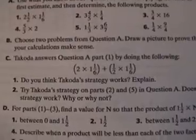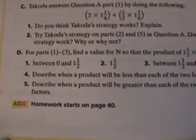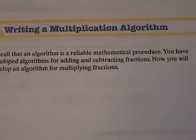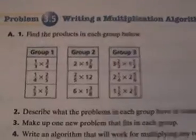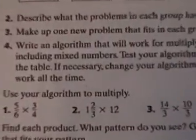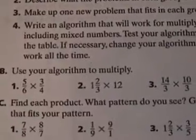They're breaking up the two parts to make it easier. Do you think the strategy works? Explain. Find the values for the parts — the product is this and this and this. Now, guess what? You get to write a multiplication algorithm. An algorithm is a reliable mathematical procedure — the word algorithm is not even used in traditional math, it's used in computer science. Find the products of each group — but how would you find them? They didn't give you any way to do it. Describe what problems each group have in common. Make up a new problem that fits in each group. Write an algorithm that will work for multiplying any two fractions, including mixed numbers. Test your algorithm on the problems in the table. If necessary, change your algorithm until you think it will work all the time. Well, that should take about 10 minutes.